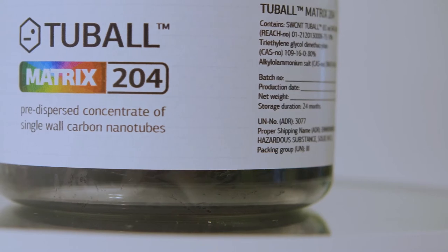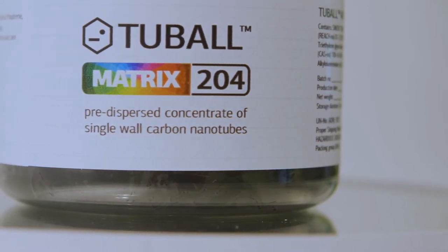So now let's take the most popular base resin, a polyester resin, and implement Tubal Matrix 204, which was specifically designed for gel coats. Tubal Matrix 204 is a flaky black material which is very easy to handle.